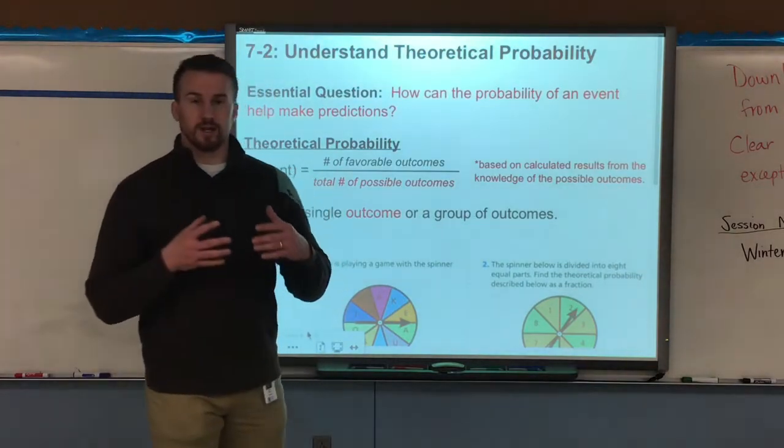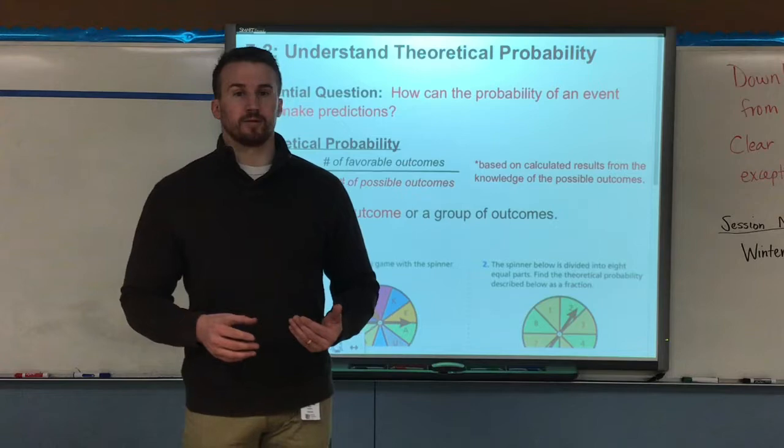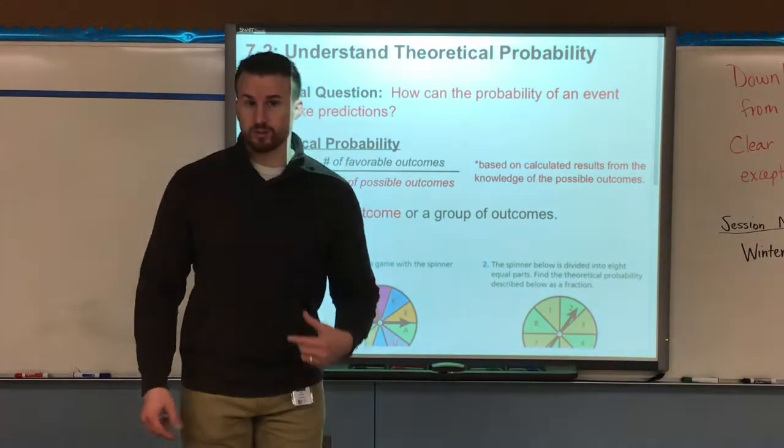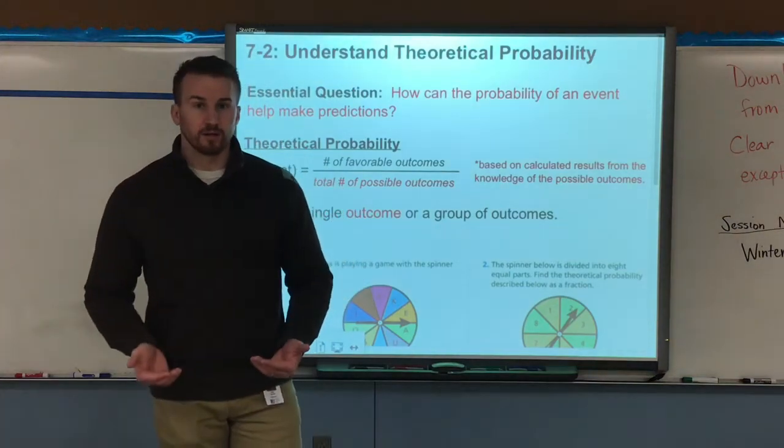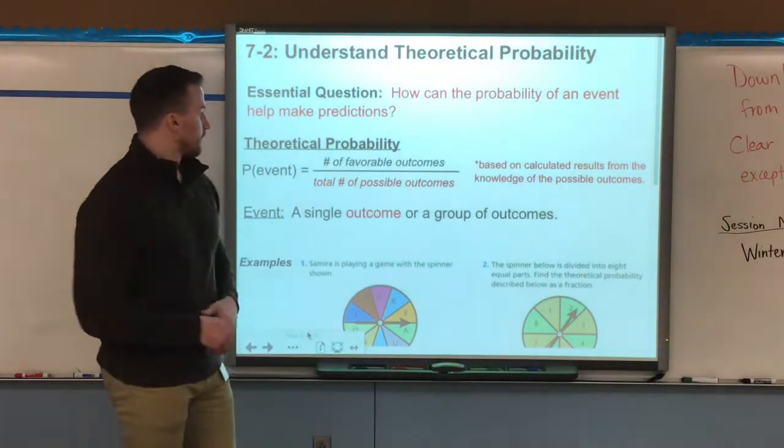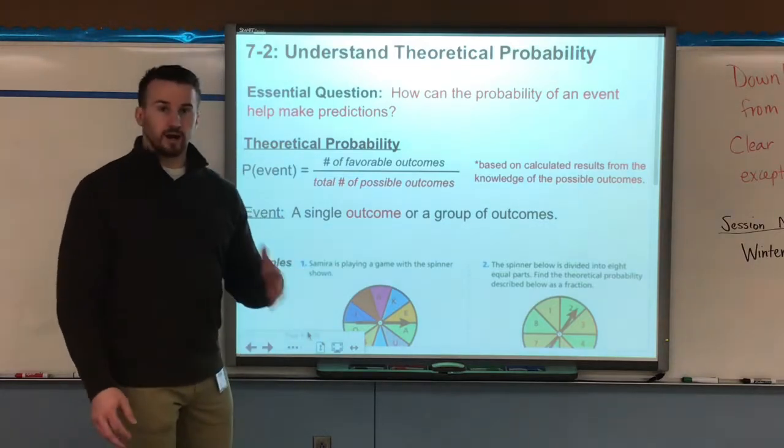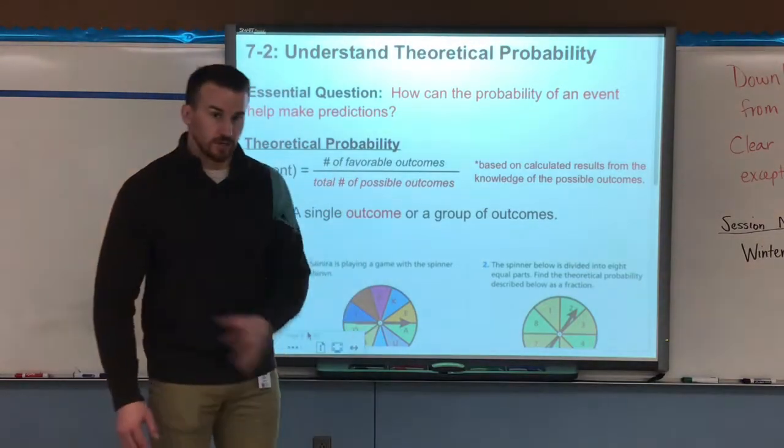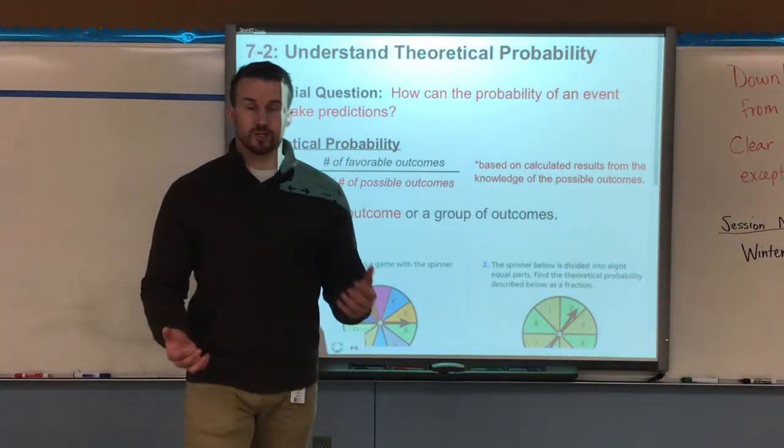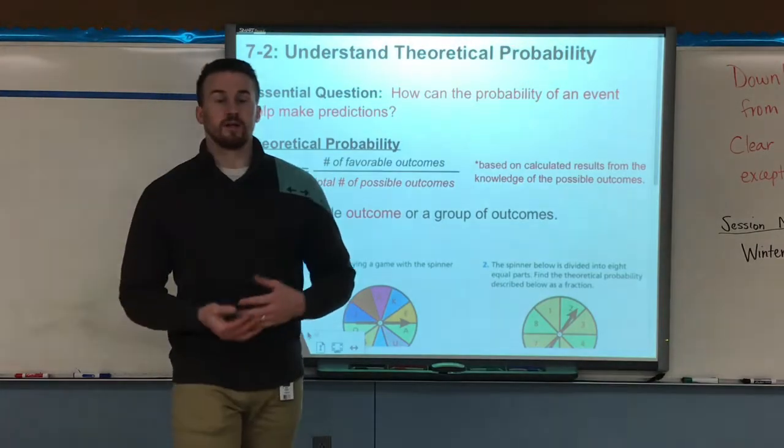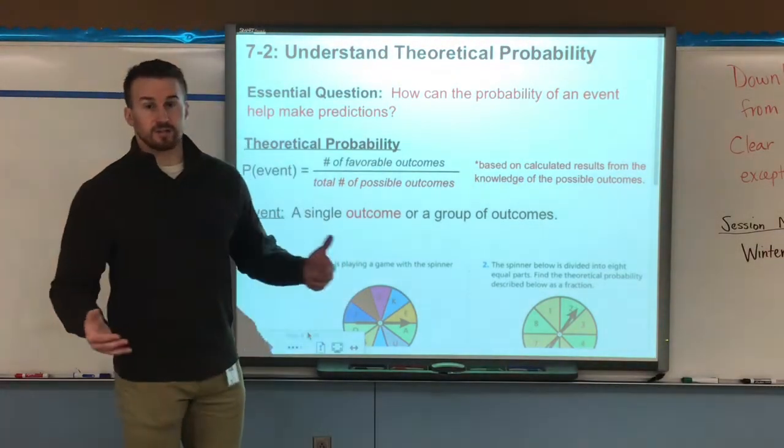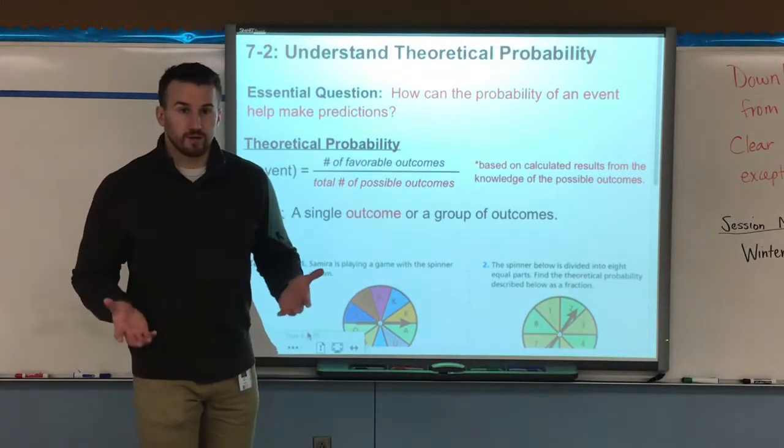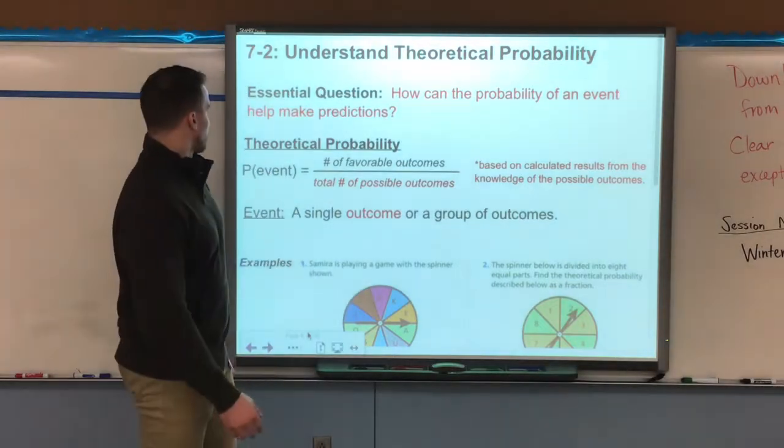What that is, is that it's in theory what should happen. So for example, if I flipped a coin, it should land on heads once and tails once because they're equally likely to land on each side. Same with rolling a die. If I roll a die, each number one through six is a one in six chance of happening. So if I rolled it six times, theoretically I should get a different number each of those six rolls. That's in theory what should happen.